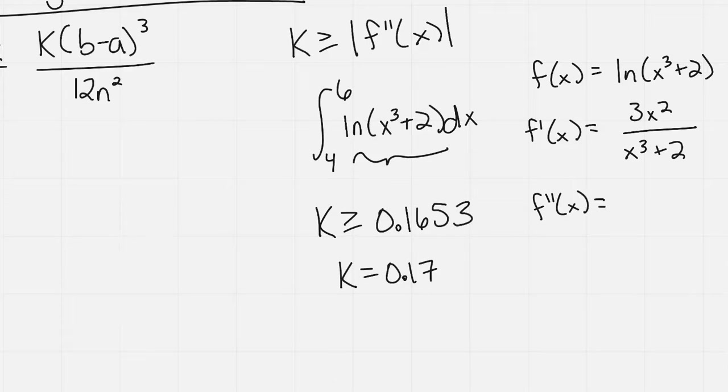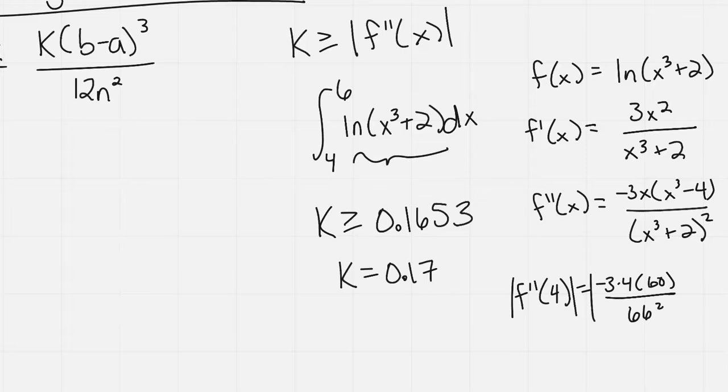And then the second derivative would be negative 3x times x cubed minus 4 all over the quantity x cubed plus 2 squared. So then we would look at the values between 4 and 6 and see what's happening. And if you were to let x equal 4 in this function, we're looking at the absolute value. The absolute value of this negative 3 times 4 and then x cubed minus 4, that would be 60 in there all over 4 cubed plus 2. That'd be like 66 and that's squared. And so then that comes out to about 0.165.